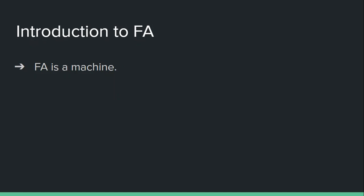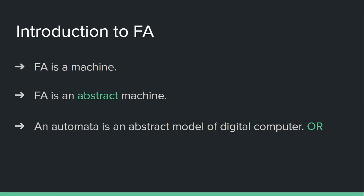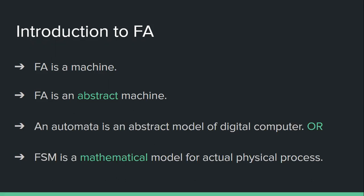Have you ever seen this kind of machine physically? No. So I have to make this statement better by adding one important word: finite automata is an abstract machine, meaning it has a logical existence and logical structure. Therefore we can say that an automata is an abstract model of a digital computer, or my FSM is a mathematical model for an actual physical process.